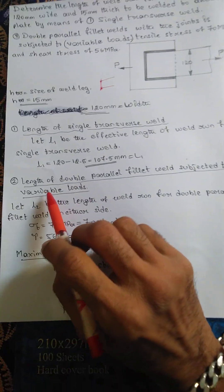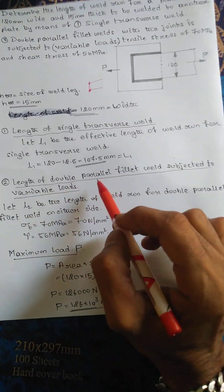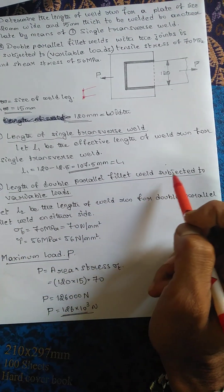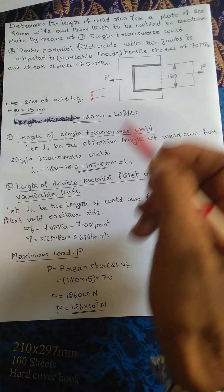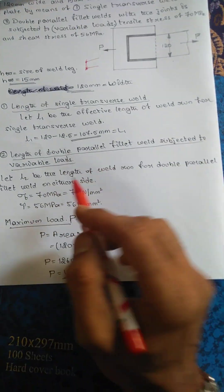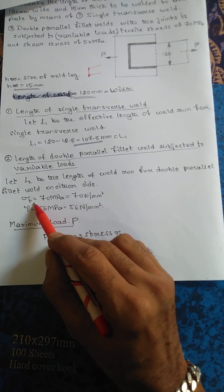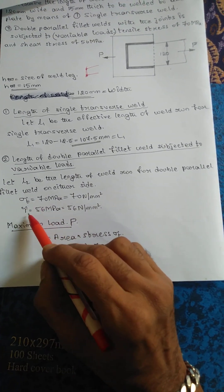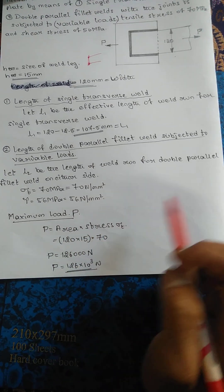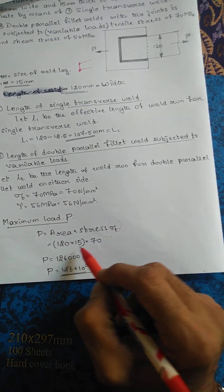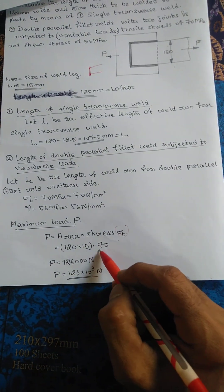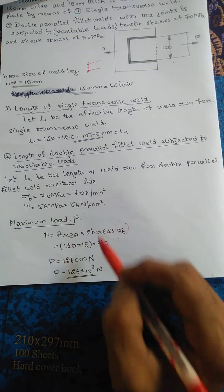Next, length of double parallel fillet weld subjected to variable loads. The loads are given, the loads are acting horizontally, so you have to consider load here. Initially sigma is given, tau is given - tensile and shear are given.